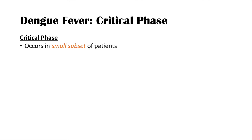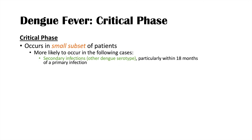The critical phase occurs in a small subset of patients. It is more likely with a secondary dengue infection — when someone has had a previous infection, recovered, and then gets infected again, often with a different dengue serotype. The risk is higher if the second infection occurs within 18 months of the first. The critical phase occurs about three to seven days into infection after defervescence — after the fever has resolved — and lasts about 24 to 48 hours.